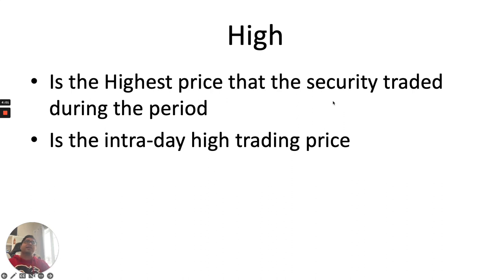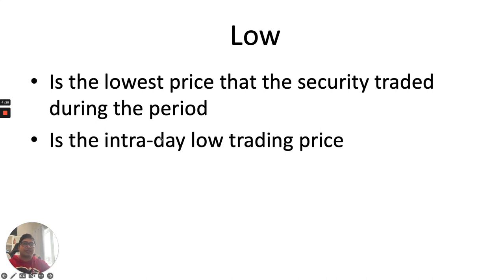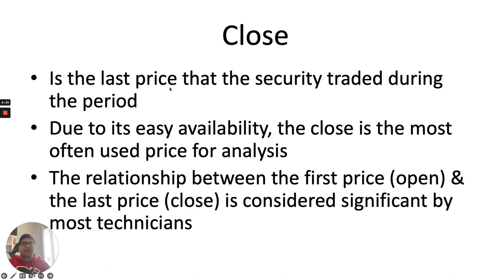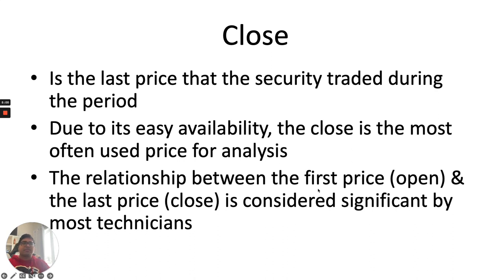High is the highest price that a security traded during the period — the intraday, intra-week, or intra-month high depending on the chart type. Low is the lowest price in the given timeframe. Close is the last price that the security traded during the period. Due to its easy availability, the close is the most often used price for analysis — whenever you look at a line chart it shows information as a single line representing nothing but closing prices. The relationship between the first price (open) and the last price (close) is considered significant by most market technicians.